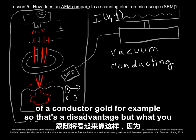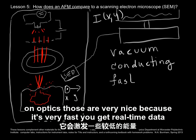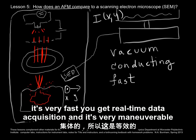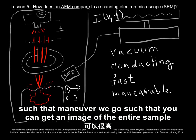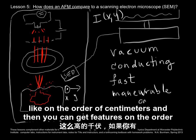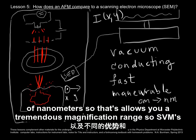That's a disadvantage. But the electron beam steering optics are very nice because it's very fast — you get real-time data acquisition, and it's very maneuverable, such that you can get an image of the entire sample on the order of centimeters, and then zoom into features on the order of nanometers. That allows a tremendous magnification range.